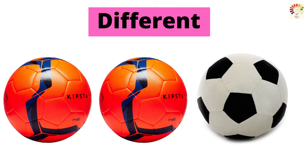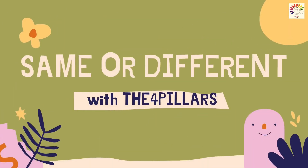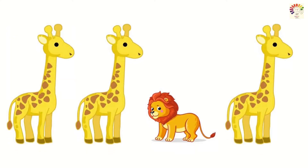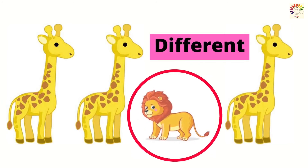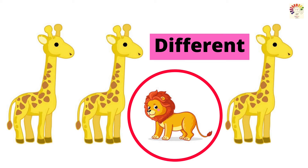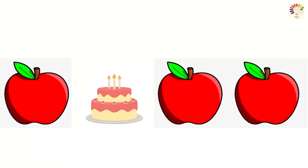Okay children, now you understood what is same and different. So now we will play a game. Teacher will show you a few pictures and you have to find out the different object in it. Shall we play the game? What is in this picture? Can you find out the different animal in this picture? Can you look carefully and say which is the different one? The lion is different. Why? Because all others are giraffes and they have same size, same color and same shape. But the lion is not same as them because it has a different color, different shape and different size. So we will say the lion is different. Very good — you are smart kids!